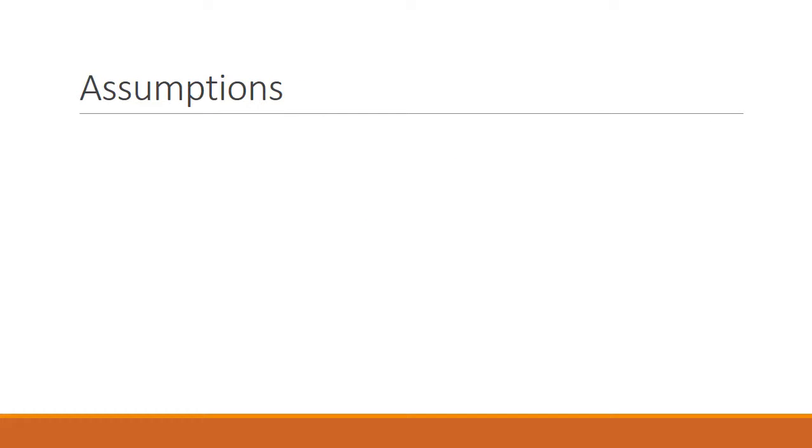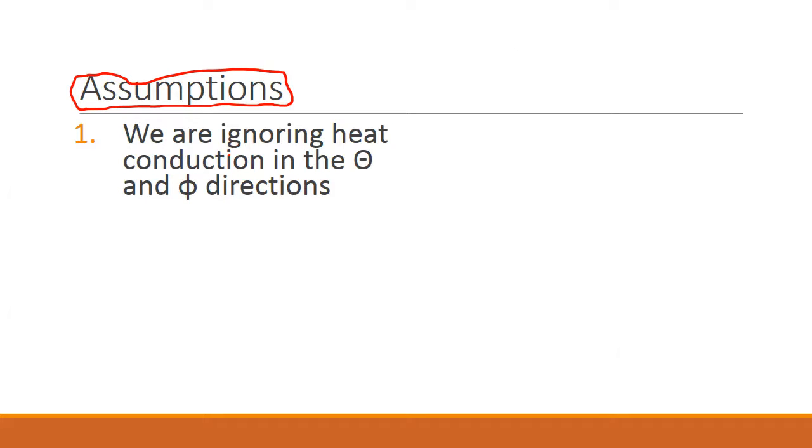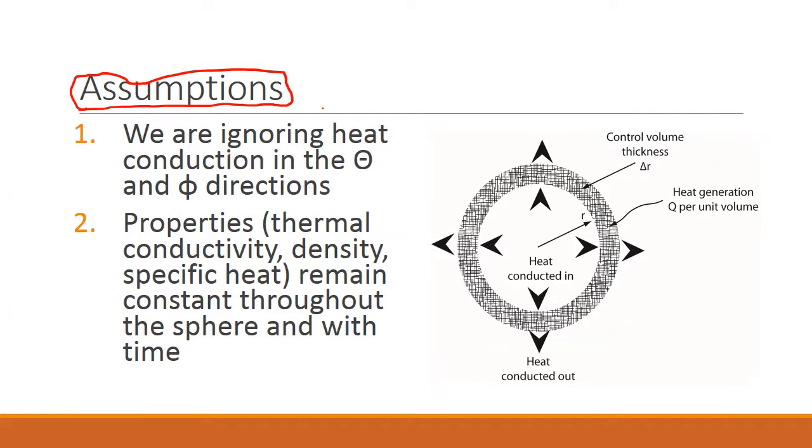Finally, we want to make sure we realize what the assumptions here are in making this derivation, because whatever we derive is going to have the restrictions that we make here. So the assumptions are: first, we are ignoring heat in the theta and the phi direction. So this is my theta direction, and the other angular direction that I can draw is the phi direction.